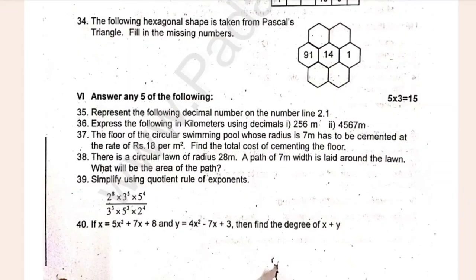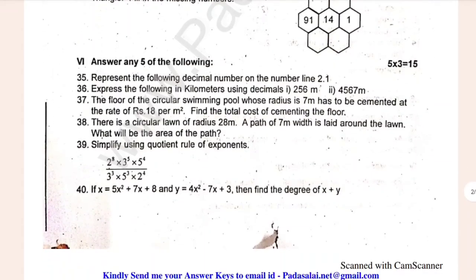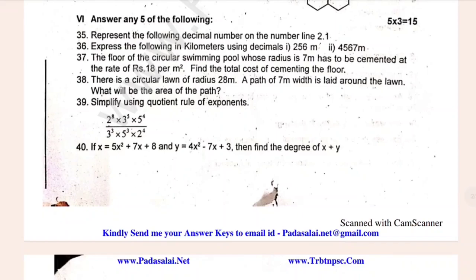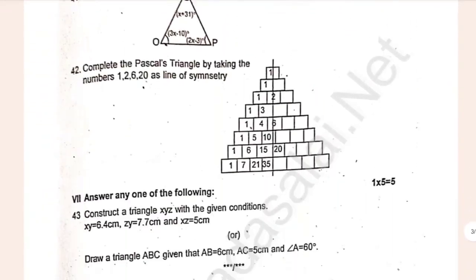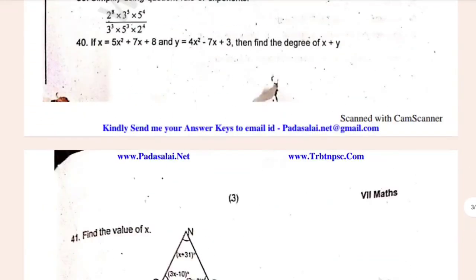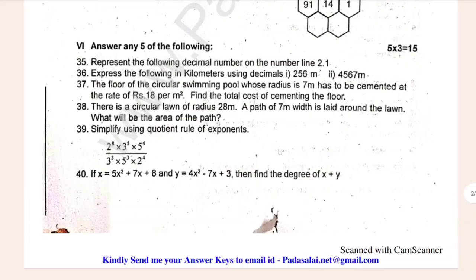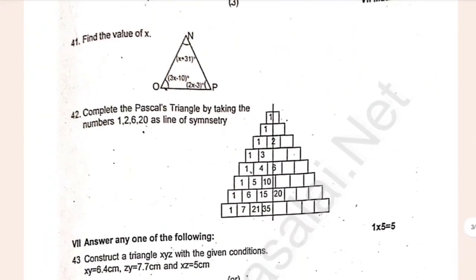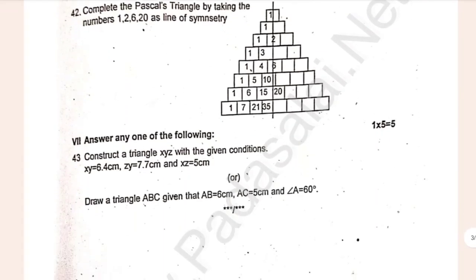3 marks. Represent the following decimal number on the number line: 2.1. Questions 45, 36, 37, 38, 39, 40, 41, 42, 43. 5 marks is very simple.